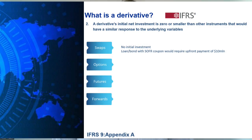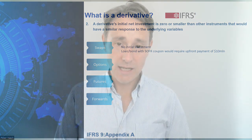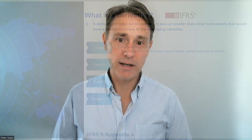So we've covered the first attribute. The second attribute is that the net initial investment of the derivative is either zero or smaller than another instrument which would have a similar response to the underlying variable. With a swap there's no net initial investment. If we wanted another instrument with a similar response to SOFR — say a loan or a bond — we'd have to pay $10 million to get similar exposure to that interest rate index.